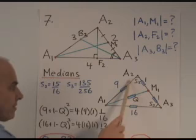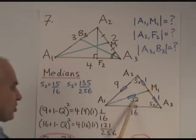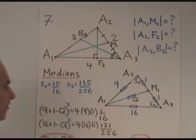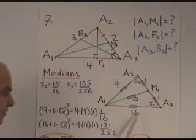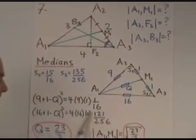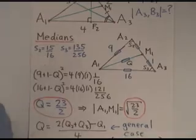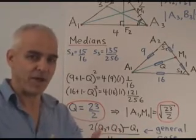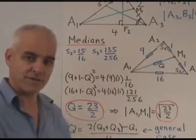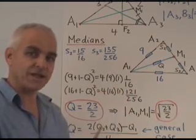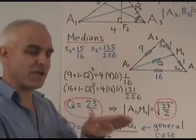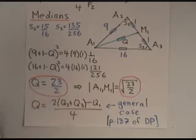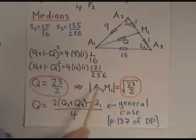So in this triangle, the cross law gives (9 plus 1 minus Q) all squared equals 4 times 9 times 1 times (1 minus that spread). And in this triangle, the cross law gives (16 plus 1 minus Q) all squared equals 4 times 16 times 1 times (1 minus this spread). So we have two quadratic equations in Q. Now you could go ahead and solve both of those quadratic equations for Q and see a common solution. But a simpler way is to simply take the difference between these two quadratic equations. The Q squared terms will cancel and you'll just get a linear equation in Q. It's a generally good trick. You have two quadratic equations, take their difference to get a linear equation. So when you do that, then there's only one viable solution and it's 23 over 2. And so the distance that we're interested in, the length of the median, is the square root of that.